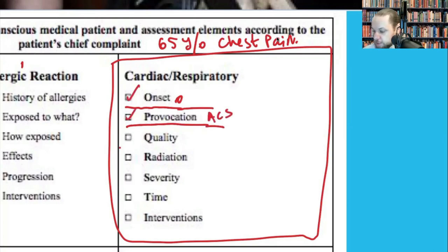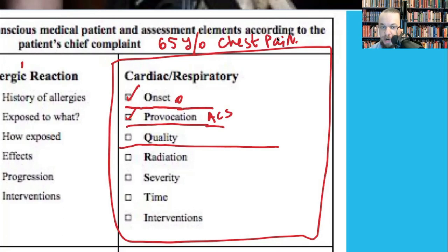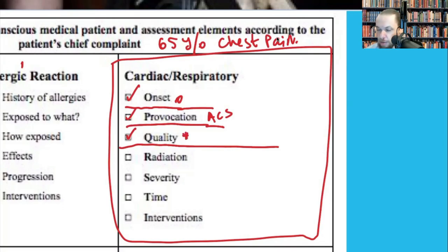Quality: ask the patient to describe the pain in their own words with an open-ended question — 'Can you describe in your own words how you're feeling?' Don't suggest words like sharp or dull, as you don't want to put words in their mouth. They may say pressure, elephant sitting on my chest, vice-like, or crushing — describing the pain in their own words.